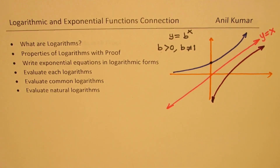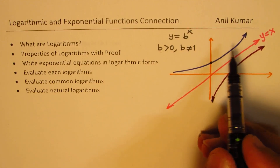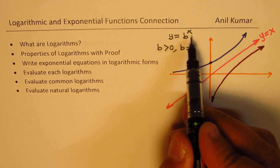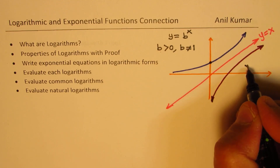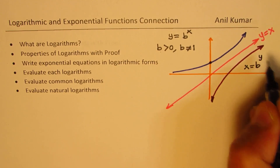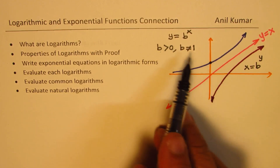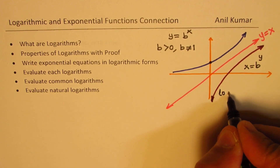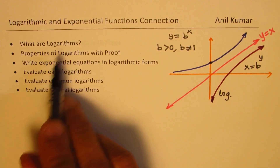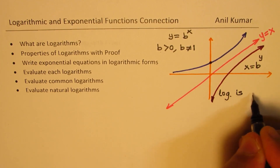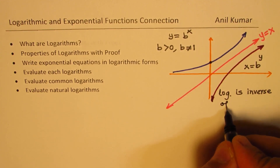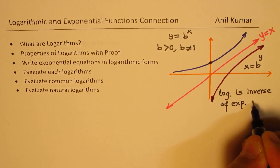This graph is the graph of the inverse. When writing y equals b to the power of x, the inverse is to swap x and y, so we write x equals b to the power of y. That is what the logarithmic graph is. In short, we write log for logarithms — log is the inverse of the exponential function.